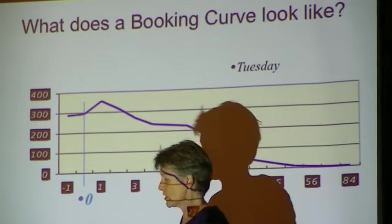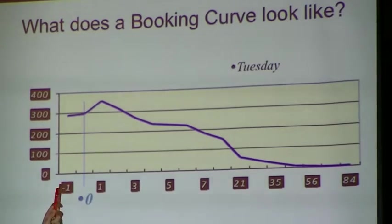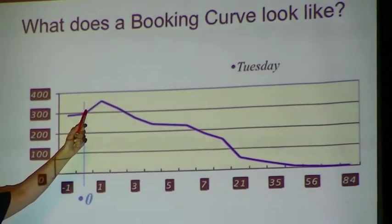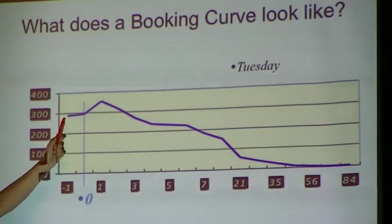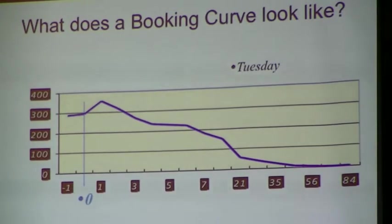Days before arrival (CBA) minus one — last Tuesday they ended up with 298. And we can see three weeks before arrival, 21 days before arrival, they had 50 reservations on the books. So 21 days before arrival, they had 50 reservations on the books. We might say 'business on the books,' we might say BOB, reservations on hand, reservations on the books — different businesses abbreviate that in different ways, doesn't matter.